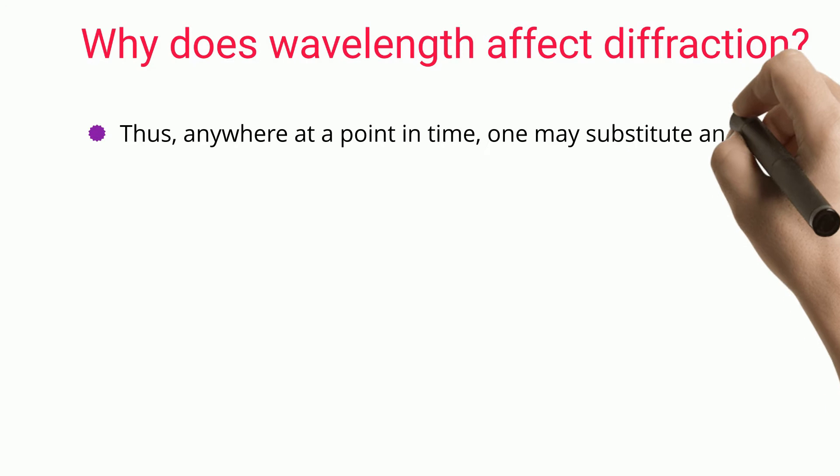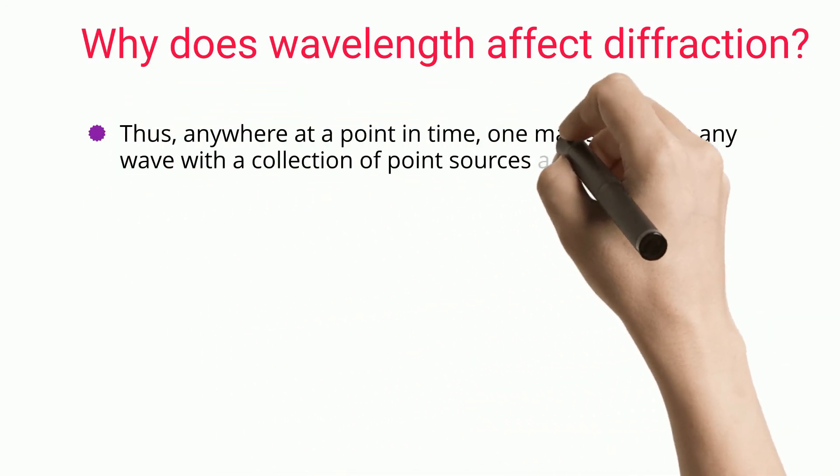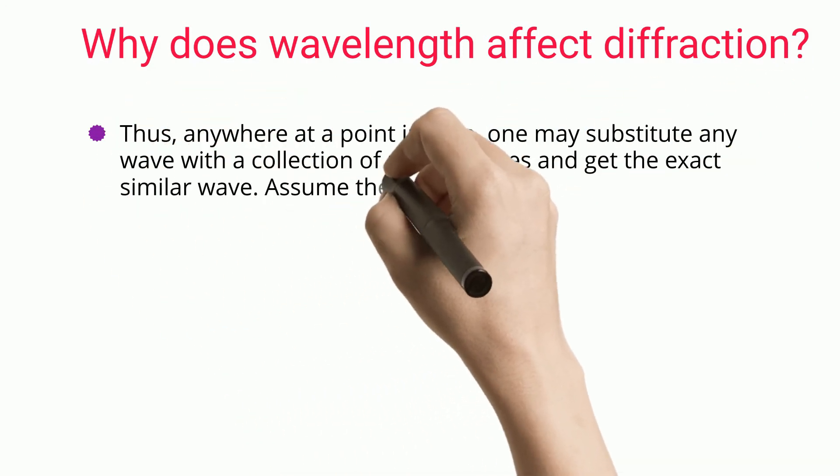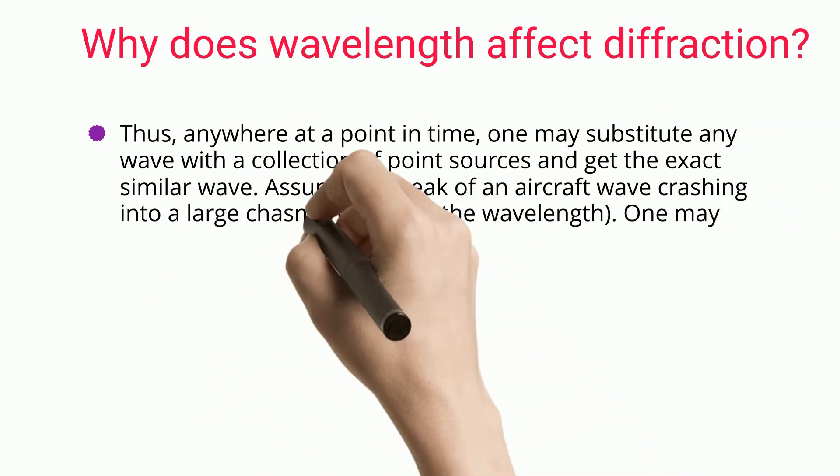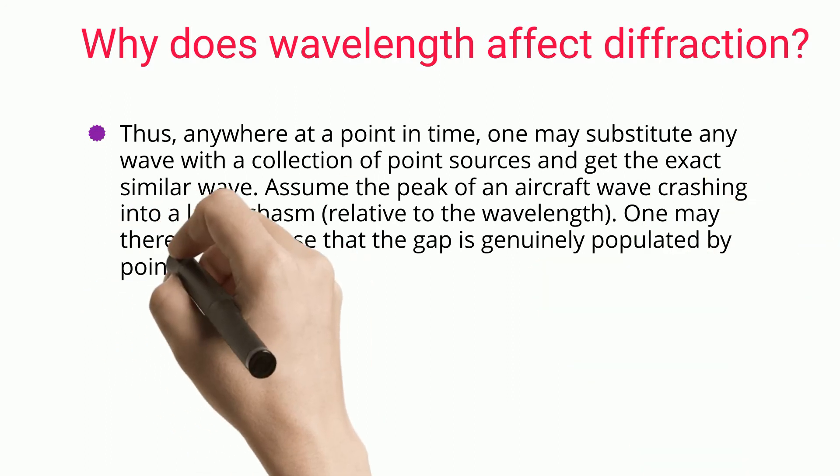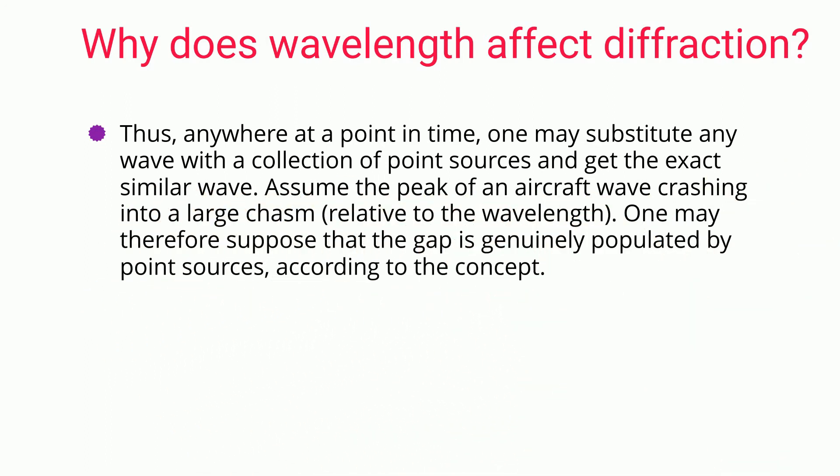Thus, anywhere at a point in time, one may substitute any wave with a collection of point sources and get the exact similar wave. Assume the peak of an aircraft wave crashing into a large chasm relative to the wavelength. One may therefore suppose that the gap is genuinely populated by point sources, according to the concept.